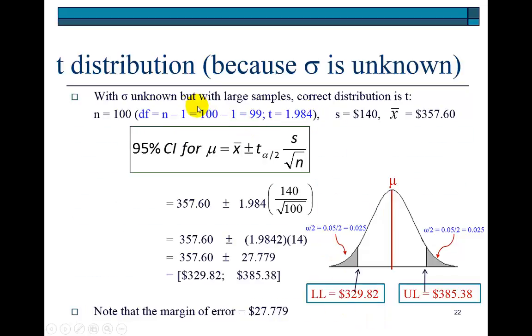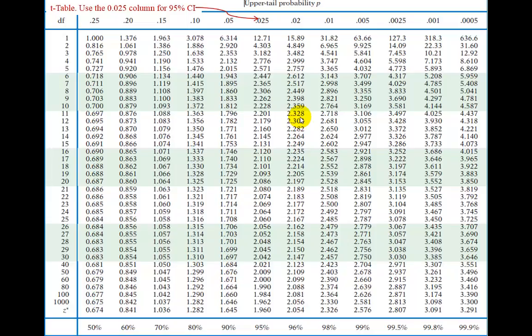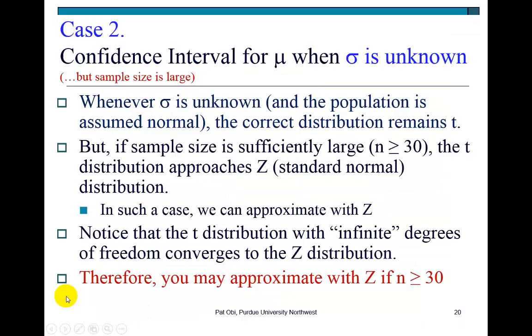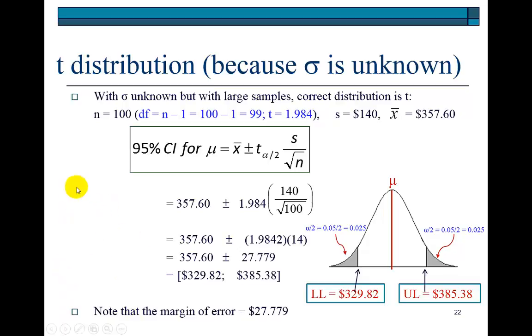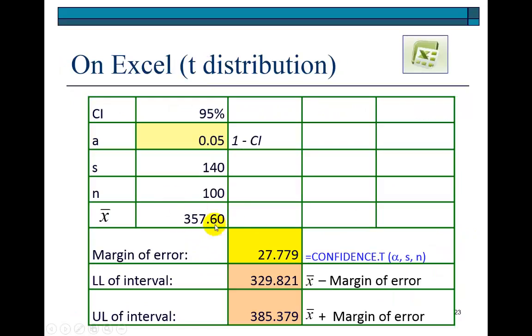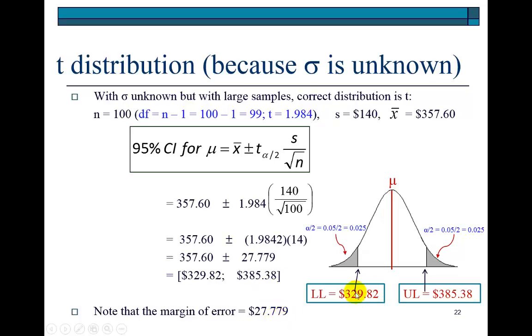To do the correct thing using the t distribution, the degrees of freedom would be 99, which is 100 minus 1, and that gives us a critical value of t of 1.984. Here it is in the table. You could say, I don't see 99. No worries, just use what's closest. That's good enough if you're using a table. For the 95% confidence, we have 1.984. That's how you get this value. But if you really want to be absolutely sure, go ahead and use Excel, and it's going to give you the lower limit and the upper limit.